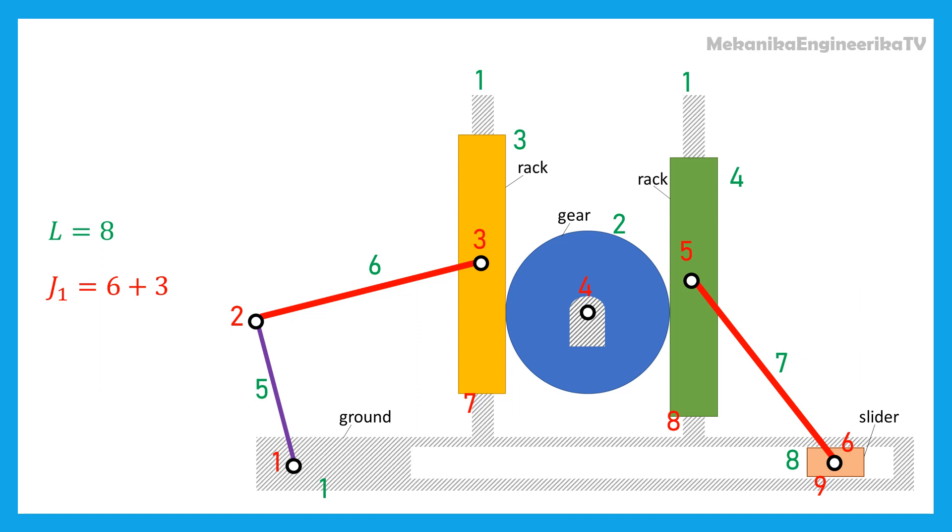Thus, in all, there are 9 lower kinematic pairs: 6 rotating joints and 3 translating joints.